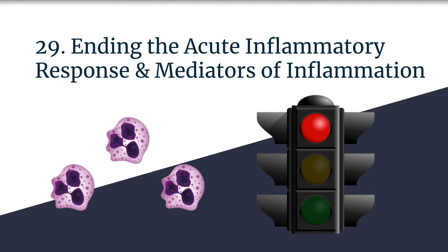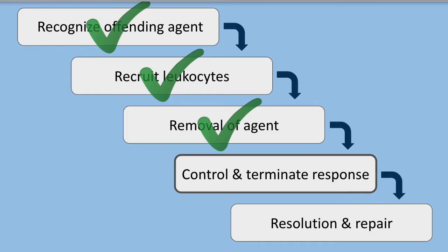This video is the second last in the series about acute inflammation, and we'll cover ending the acute inflammatory response and the various mediators of inflammation. We move through the first three steps of the acute inflammatory response — recognition of the inflammatory stimulus, recruiting leukocytes, and removing or killing the inflammatory stimulus — and now we're moving on to controlling and ultimately ending the response.